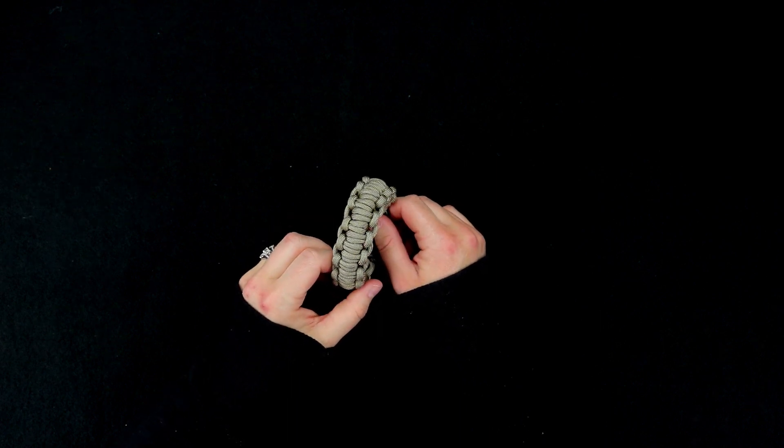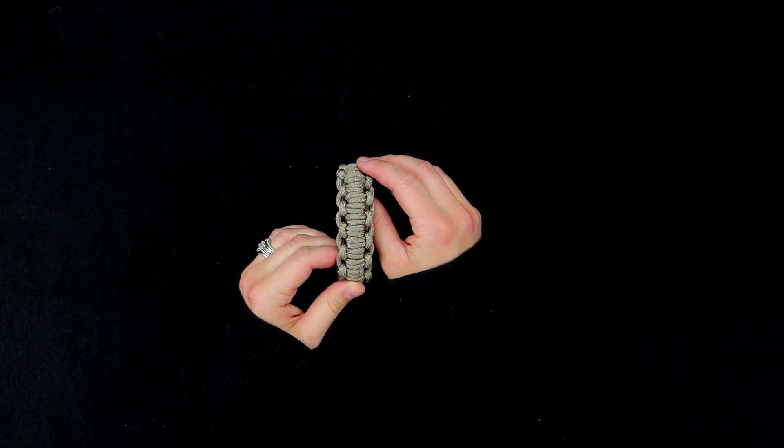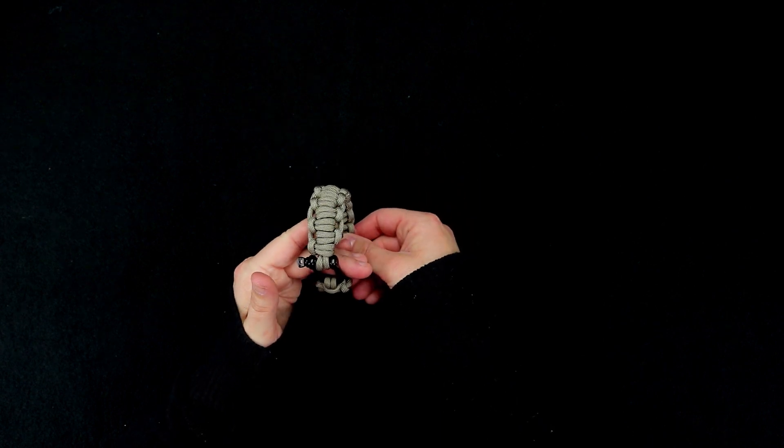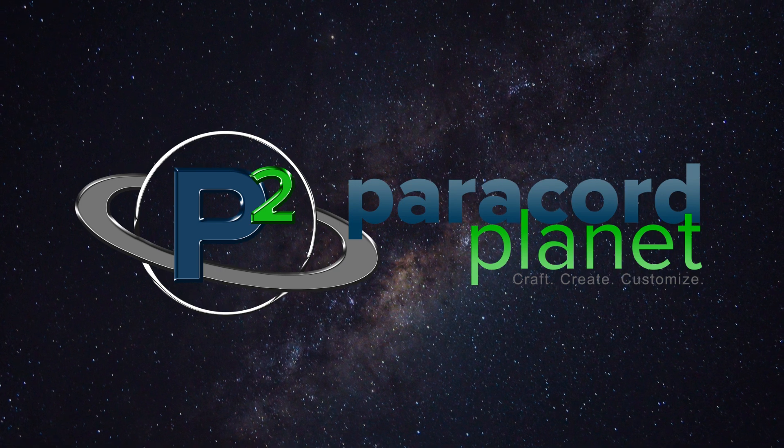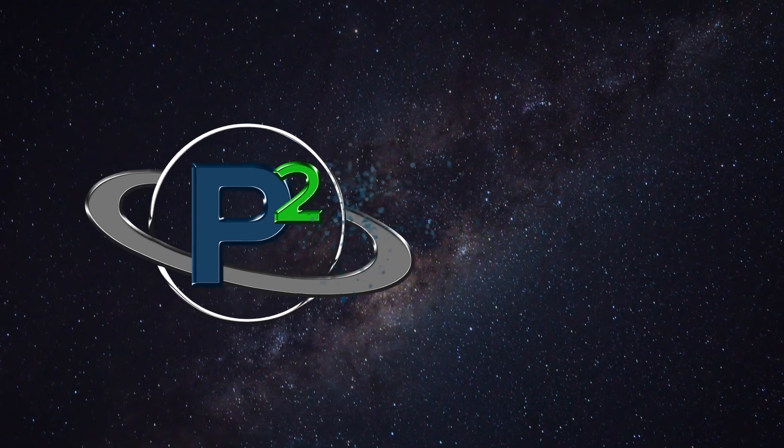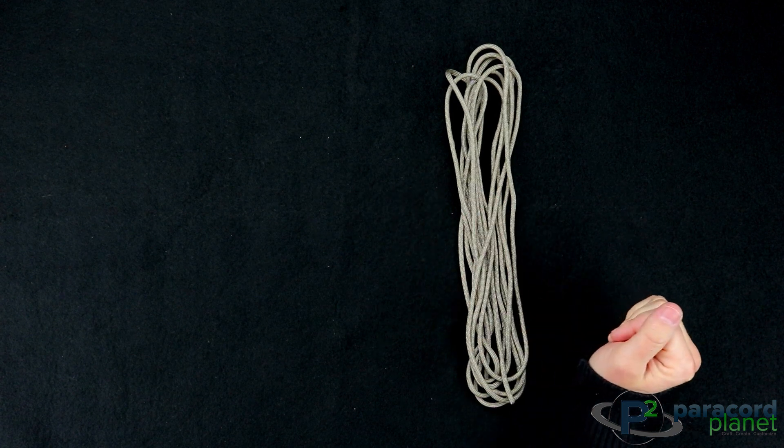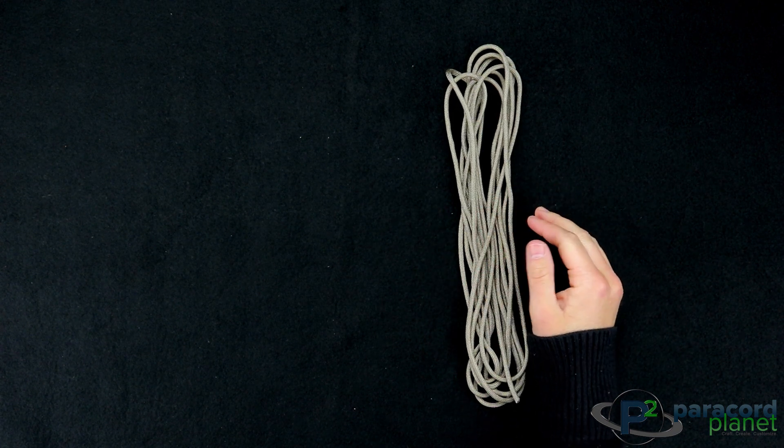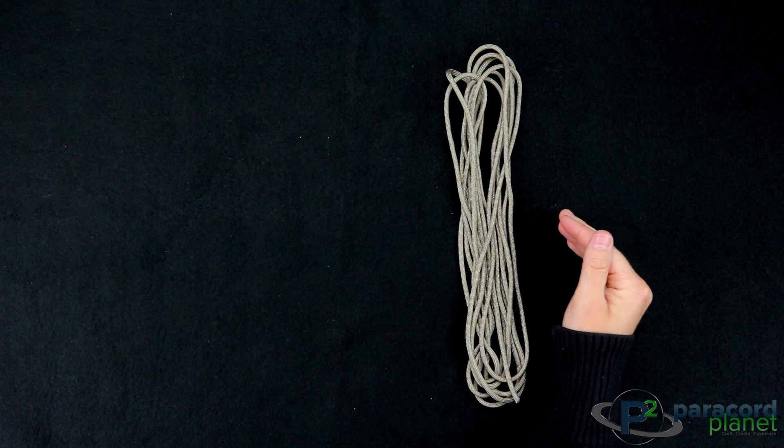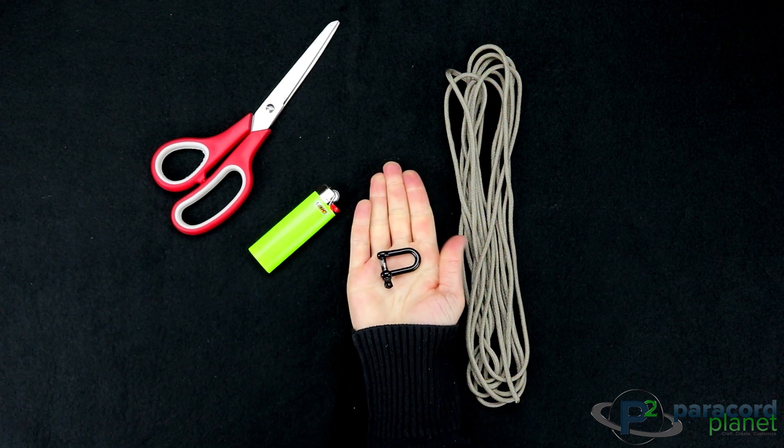Hi everybody, it's Lori from Paracord Planet and today's tutorial is on a quick deploy half hitch paracord bracelet. For this you will need paracord - I am using our mil spec 550 cord here - and you will need about 13 to 14 feet for an approximately 8 inch bracelet. You'll also need scissors, a lighter, and I have here a D shackle.